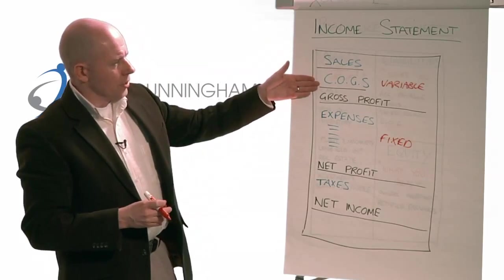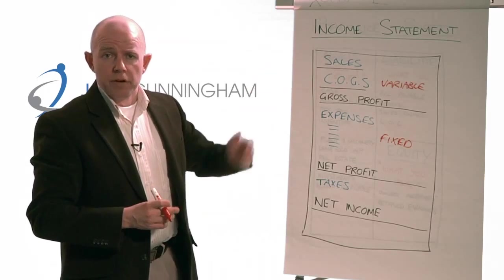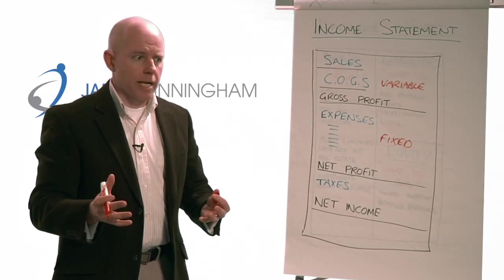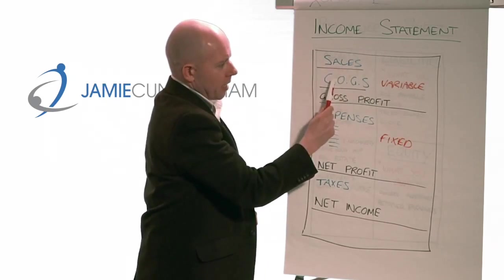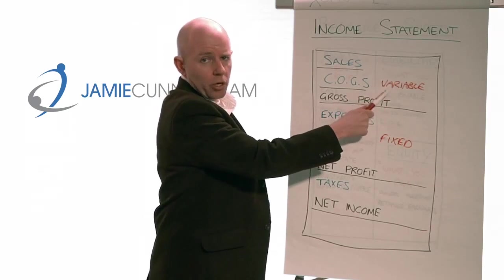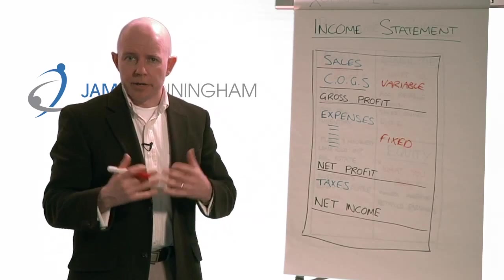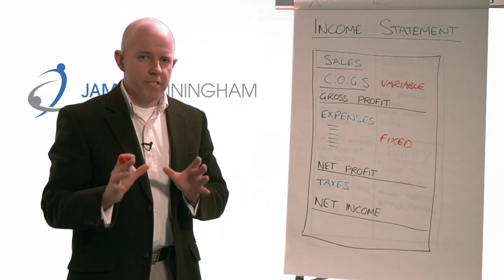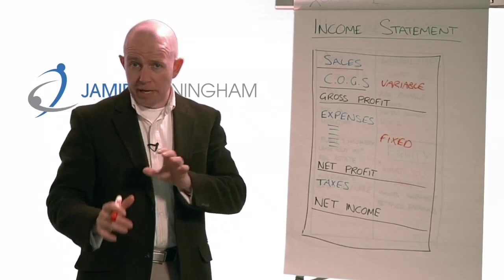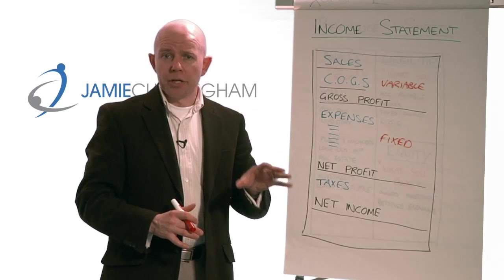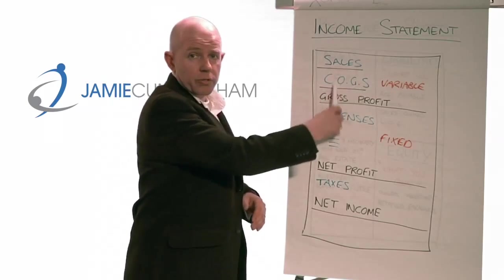Cost of goods sold — you only incur it when you make a sale. For example, if you're a bookstore and you sell a book, you record revenue for that, and in cost of goods sold you record the cost of that book. If you're a service business paying subcontractors, you only incur that expense when you get work for them to do — so that would fall under cost of goods sold.